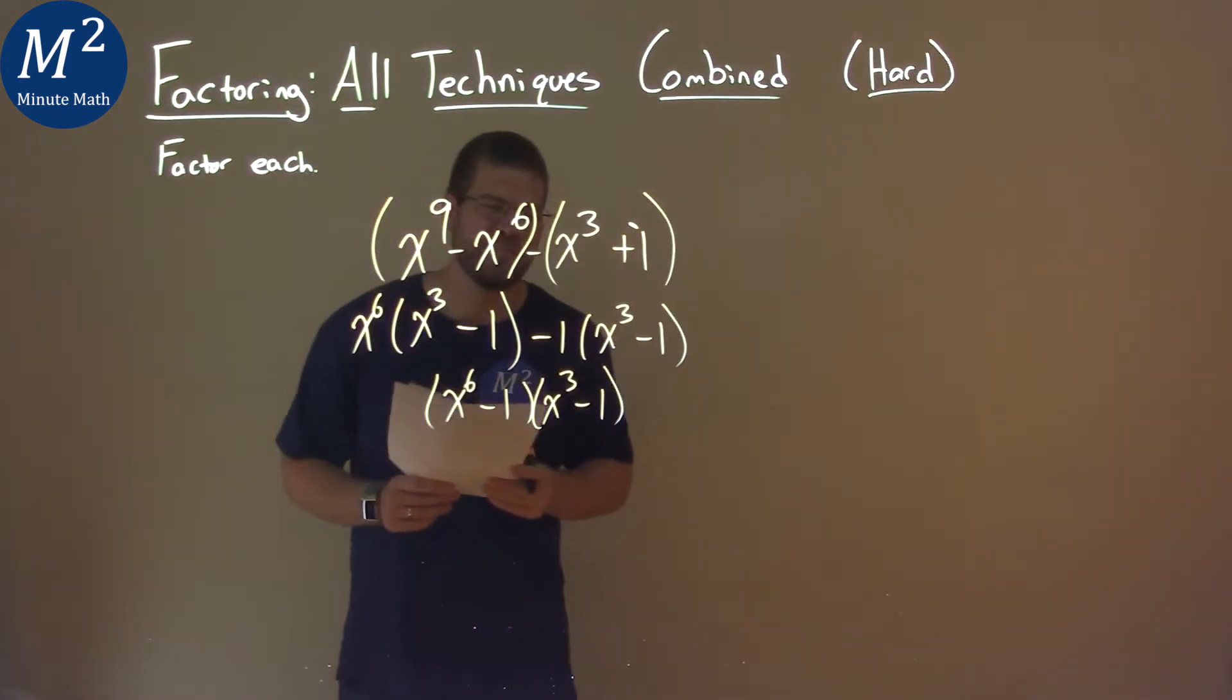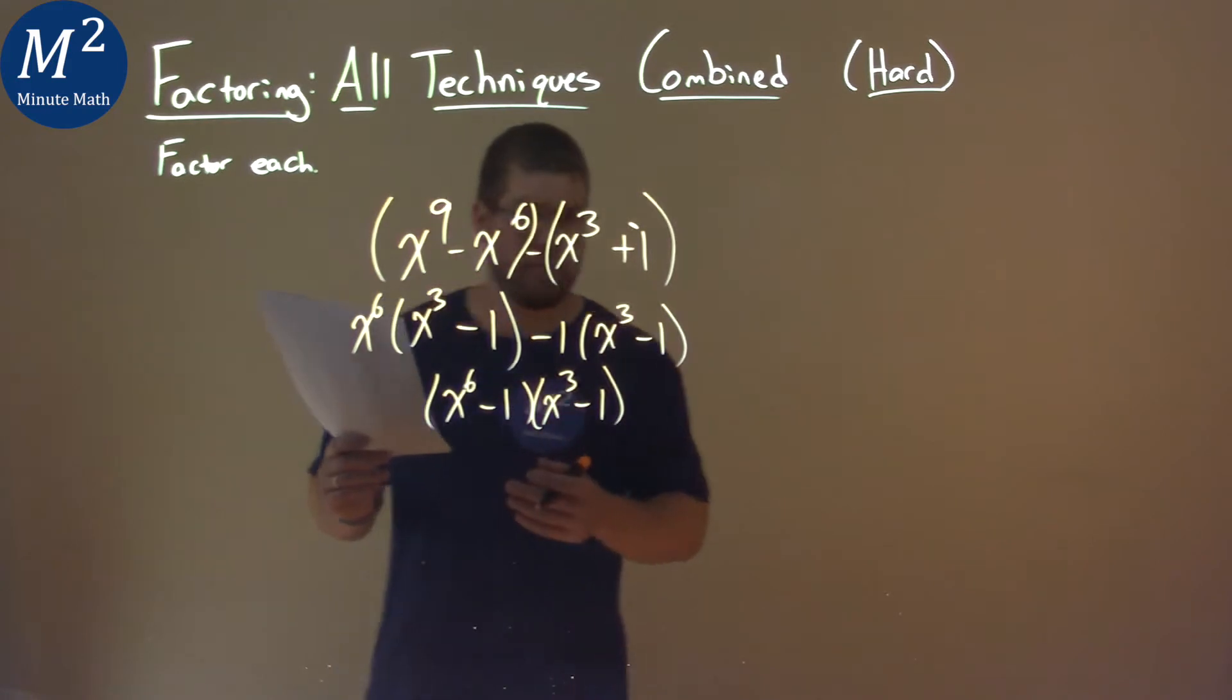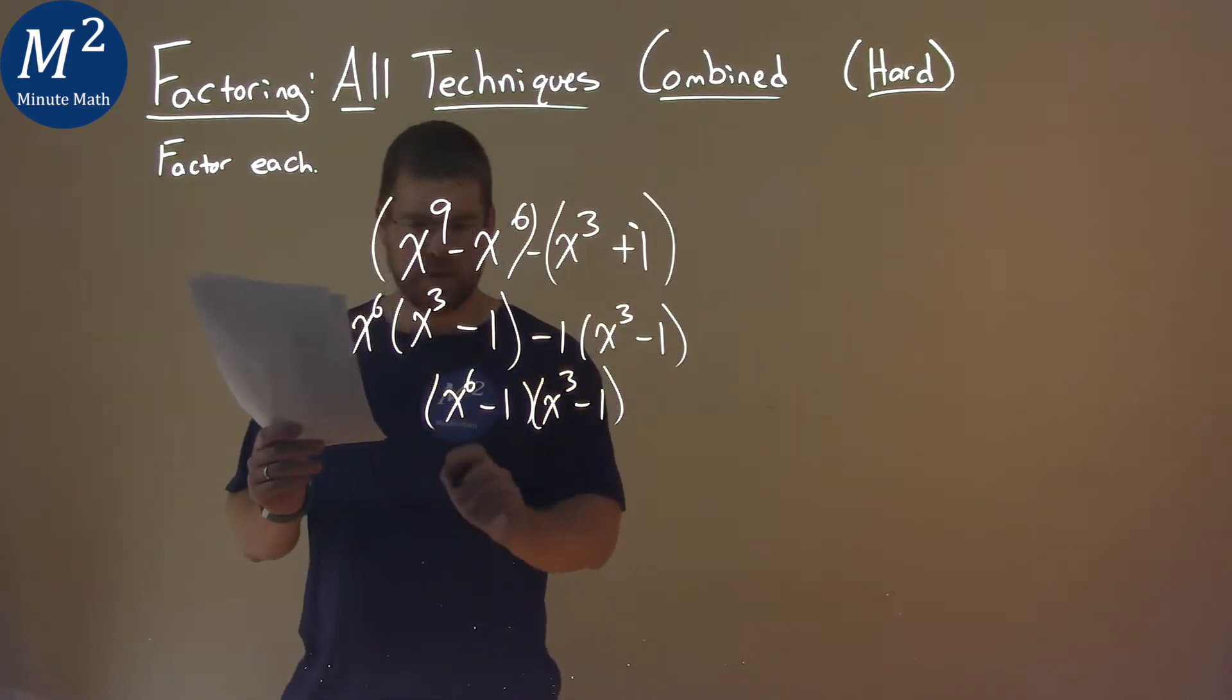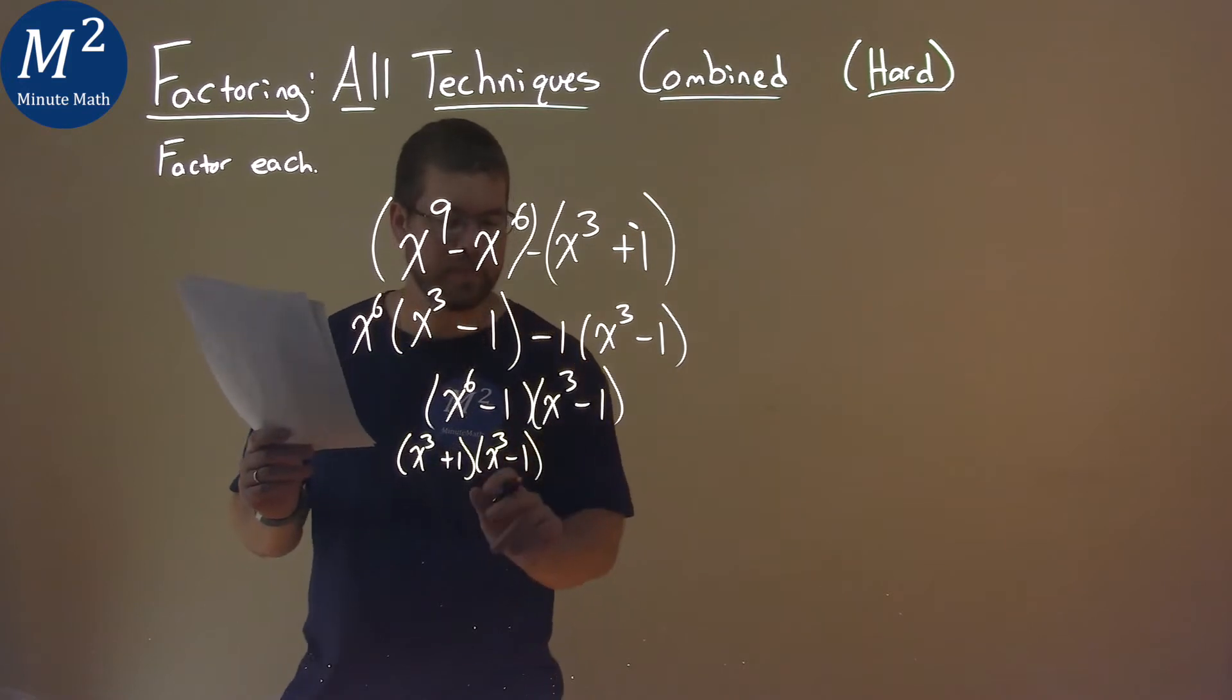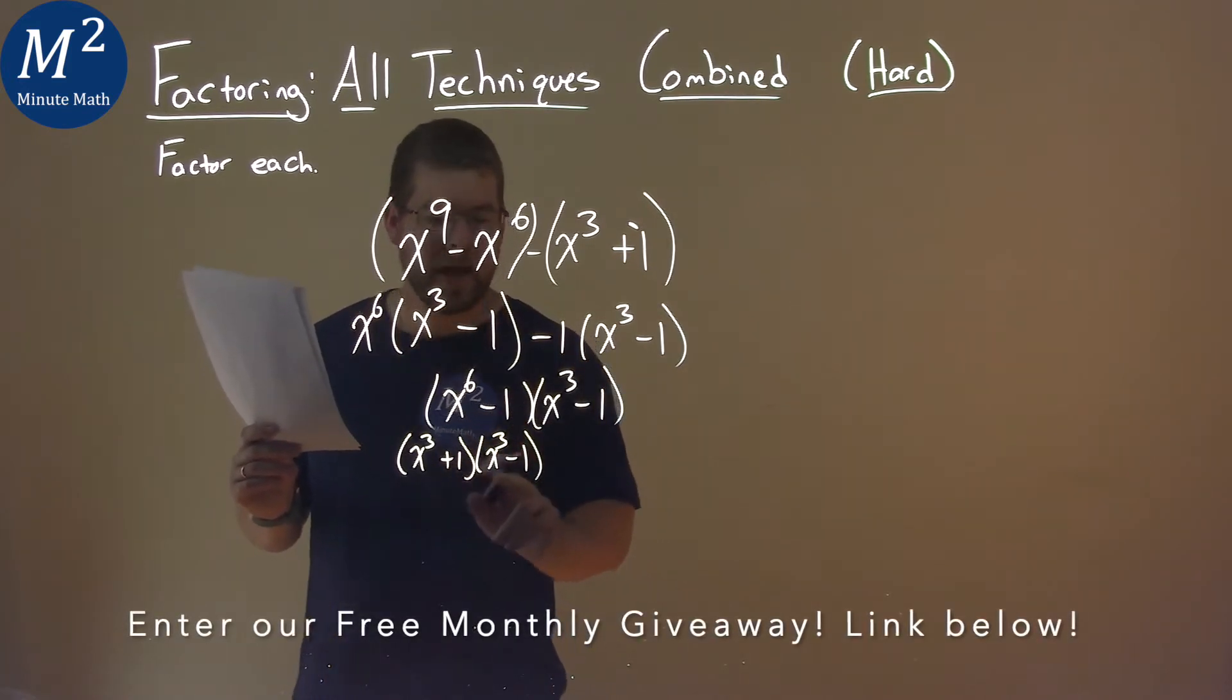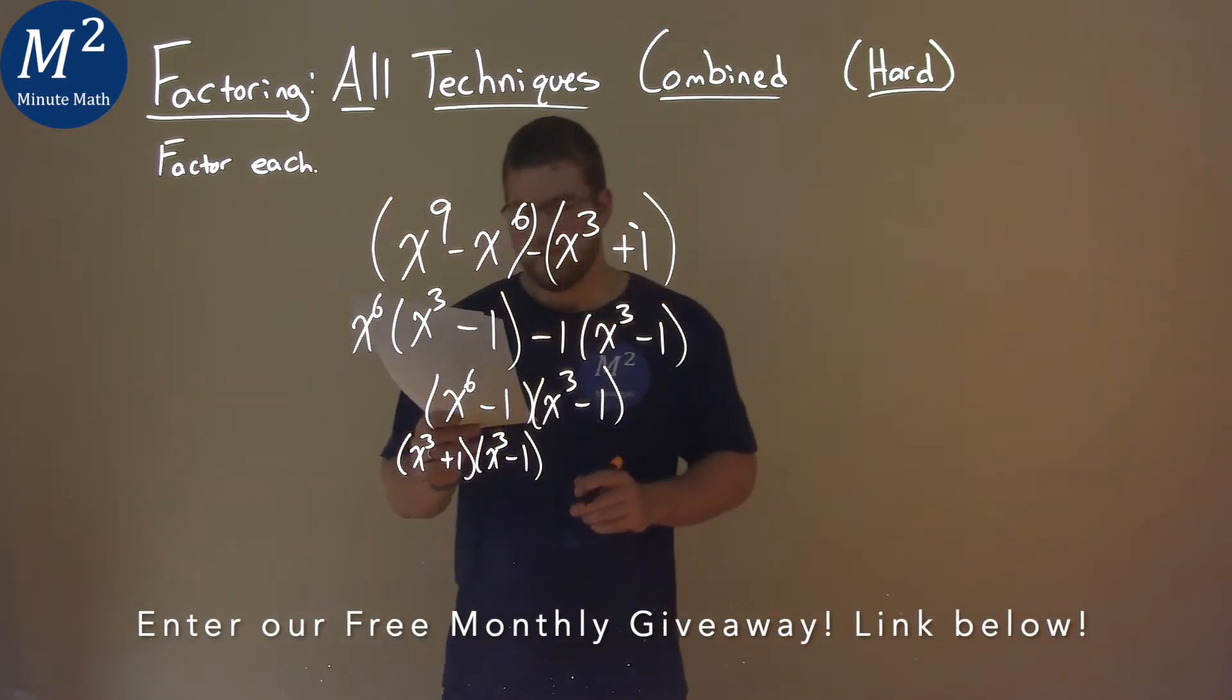And this is where it really gets tricky. x to the sixth minus one. How does that factor? This is almost like a quadratic form, the b value being zero. This comes out to be an x to the third plus one times an x to the third minus one. One times negative one is a negative one, then we add them together and we get zero. x to the third times x to the third, x to the sixth.